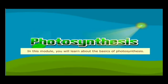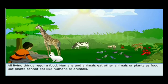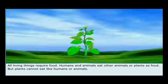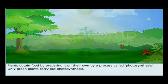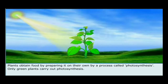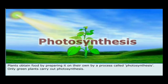In this module, you will learn about the basics of photosynthesis. All living things require food. Humans and animals eat other animals or plants as food. But plants cannot eat like humans or animals. How do plants obtain food? Plants obtain food by preparing it on their own by a process called photosynthesis. Only green plants carry out photosynthesis.